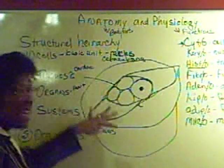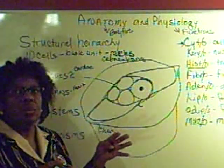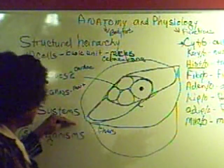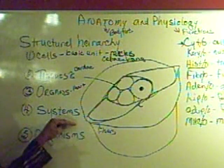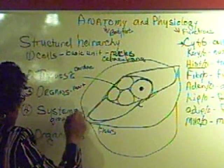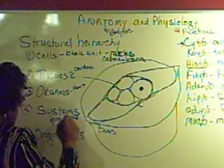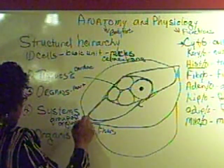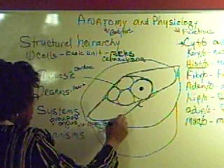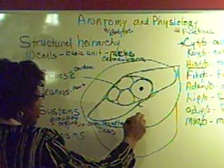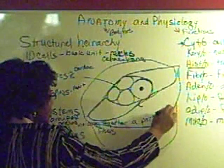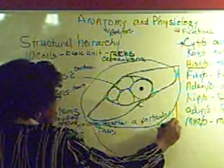Once you get several organs together that work together to do a certain function, then those organs working together are called systems. So systems are a group of organs working together to perform a particular function.